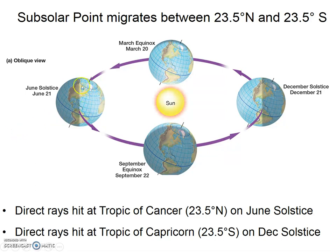On the June solstice, the Northern Hemisphere is tilted towards the Sun. On the December solstice, the Southern Hemisphere is tilted towards the Sun — or you could think of it as the Northern Hemisphere being tilted away from the Sun. When the Northern Hemisphere is tilted away from the Sun, this is Northern Hemisphere winter; when tilted towards the Sun, this is Northern Hemisphere summer. We should not refer to these as the summer and winter solstice, because what is summer in the Northern Hemisphere is winter in the Southern Hemisphere. So, we'll just call them the June and December solstices.